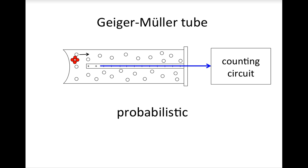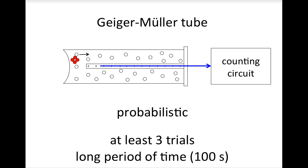There are two ways to account for this fluctuation. First, you have to perform at least three trials and then average the data together. Secondly, you have to conduct each trial for a long period of time, at least 100 seconds for the background count.